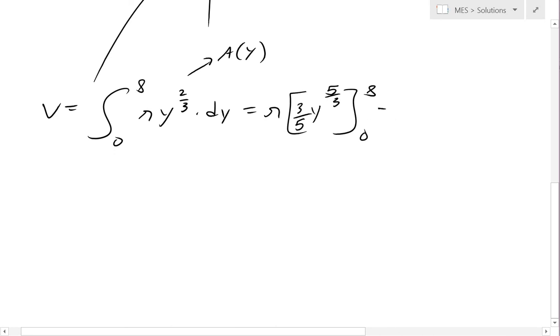So now this equals, plugging these in, we'll get pi times 3 over 5, plugging the 8 in, times by 8 to the power of 5 over 3. When we plug in the 0, we get minus 0, and 0 to the power of anything is just 0.